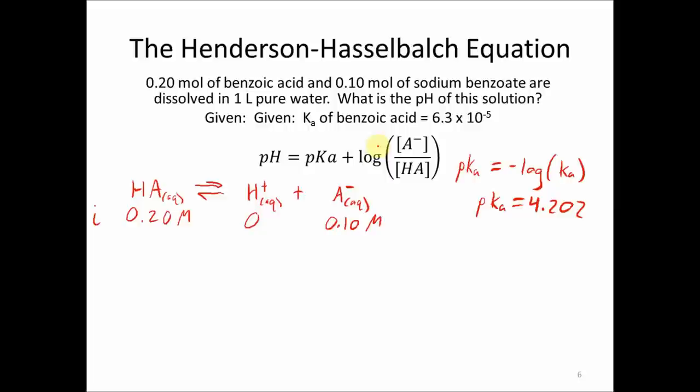Now from here, we just plug our numbers into the equation. So pH is equal to the pKa, 4.202, plus the log of the concentration of the conjugate base, which is 0.10 molar. We get this from the I of the ICE chart. And this will be divided by 0.20 molar. The molars cancel out.